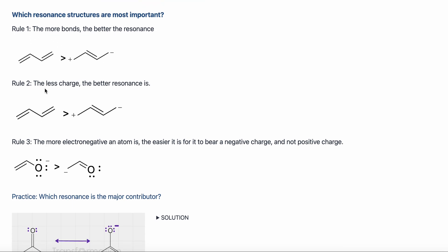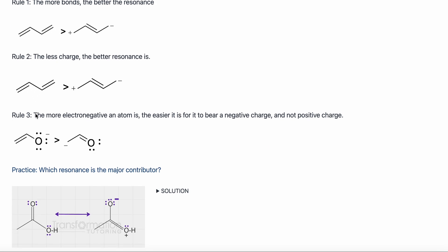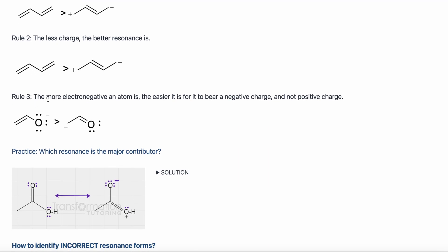Rule number two: the less charge, the better your resonance will be. On the left, this molecule has no charge; on the right, we have a positive and a negative charge — the molecule on the left wins. Rule number three: the more electronegative an atom is, the easier it is for it to bear a negative charge and not a positive charge.